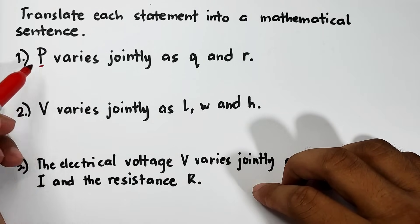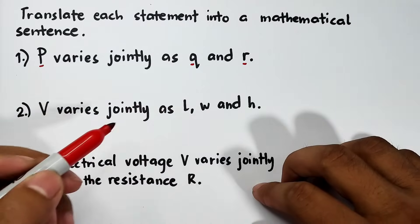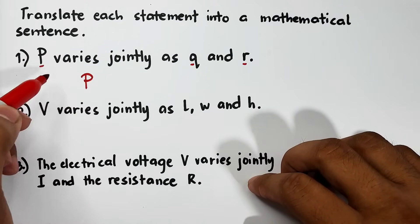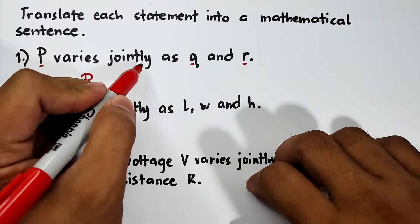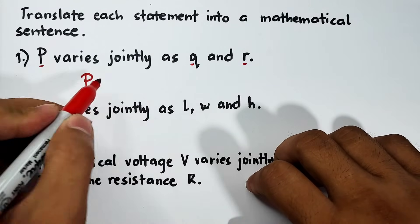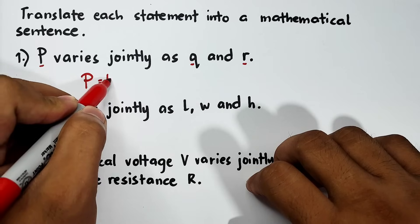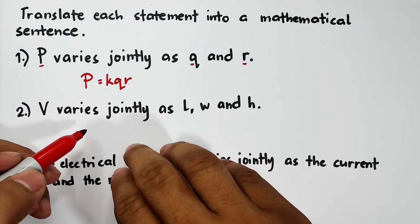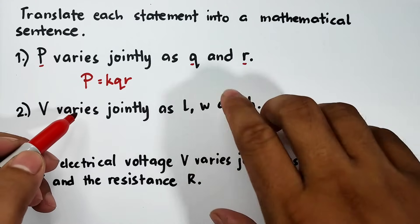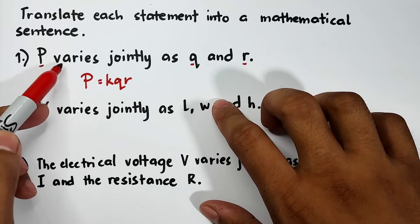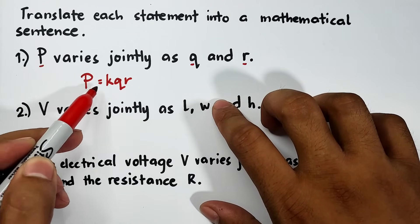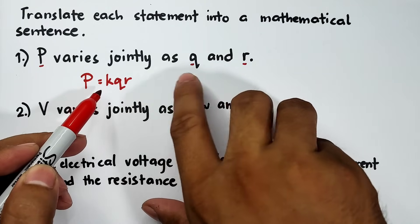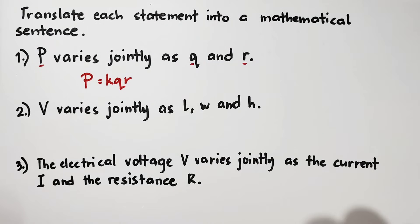The three variables are p, q, and r. You will copy p — write it as a capital letter. P varies jointly as q and r, and this q and r gives us k times q times r. This is now the mathematical sentence or the equation equivalent to this statement: p is equal to k q r.